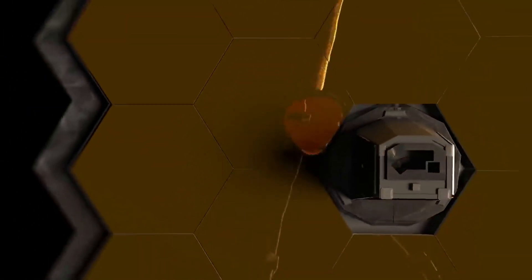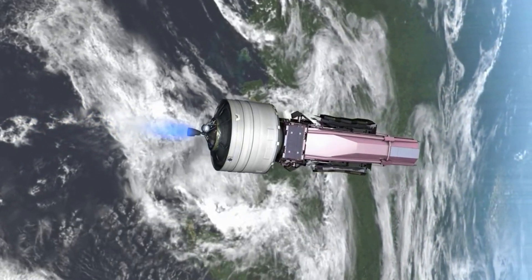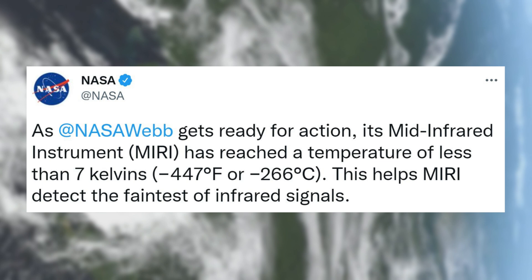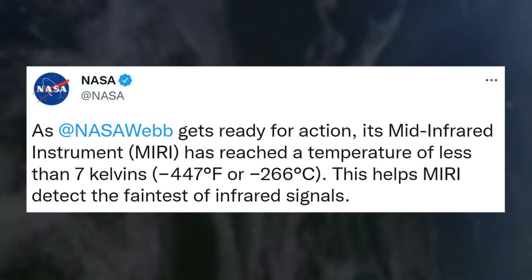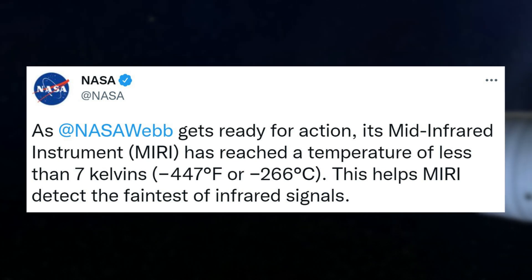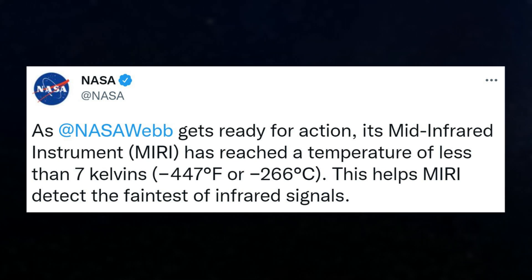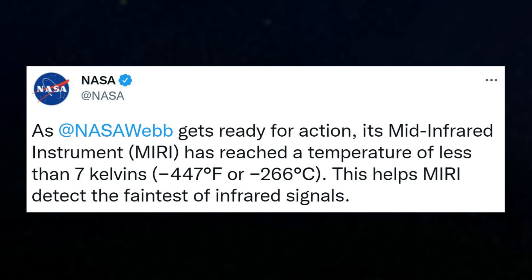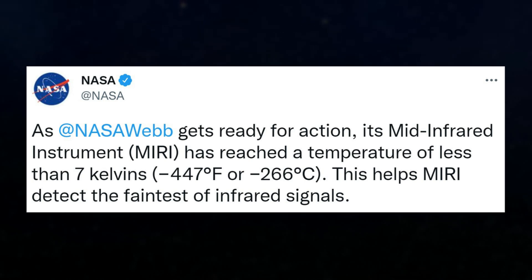It has been a few weeks since the last JWST update, however, it has made some significant progress in that time. Just yesterday NASA tweeted saying, As NASA Webb gets ready for action, its mid-infrared instrument, MIRI, has reached a temperature of less than 7 K, minus 447 degrees Fahrenheit or minus 266 degrees centigrade. This helps MIRI detect the faintest of infrared signals.